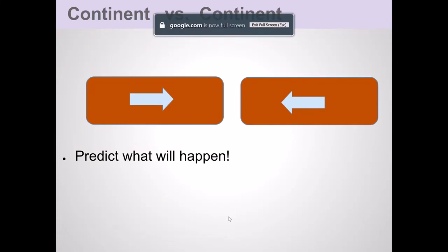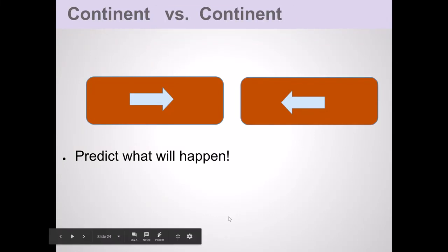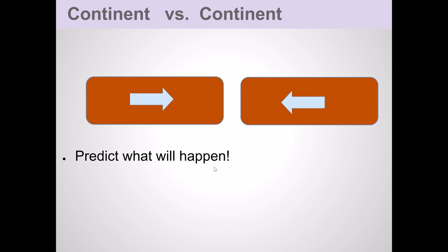This is the third and final video on convergent plate boundaries in the series of videos on plate tectonics. This particular video is talking about continent-continent collision, a very interesting type of convergent plate boundary where two continents collide into each other. What do you think happens in this scenario?